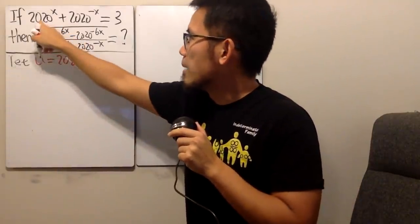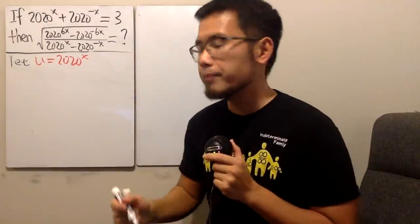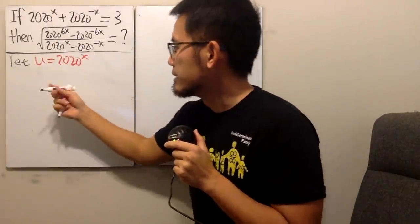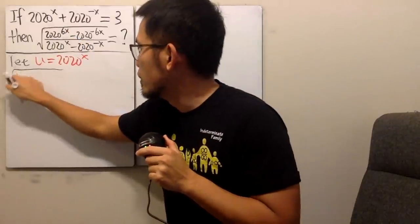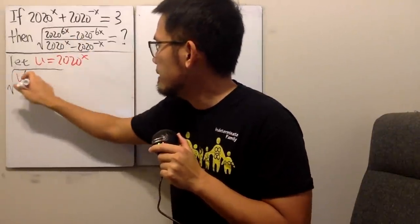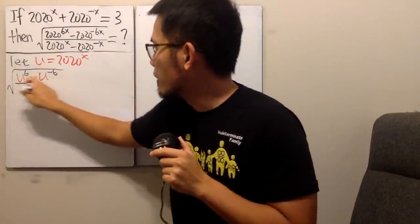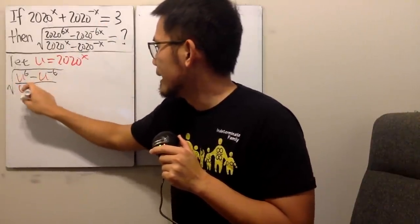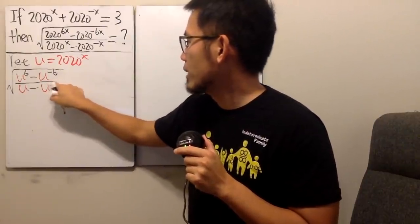So the original equation becomes u plus u to the negative one equals three. And this expression is going to be the square root, and here we have u to the sixth power minus u to the negative sixth power over u minus u to the negative one power. And that's what we have to compute.